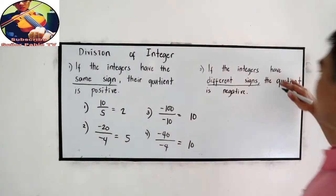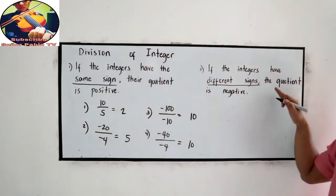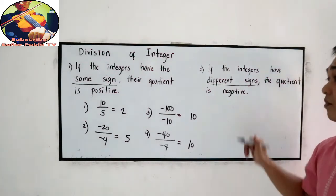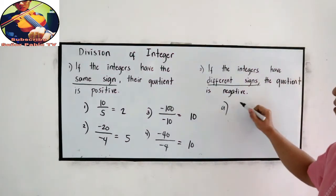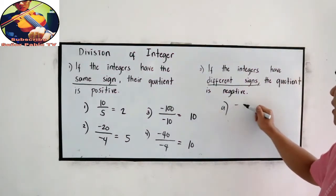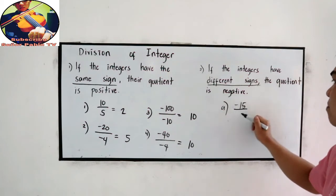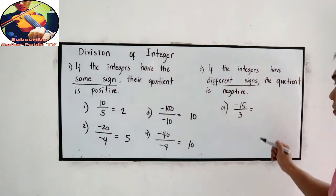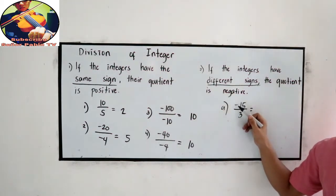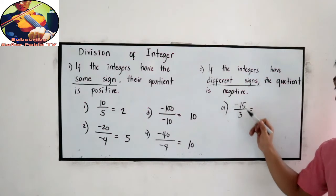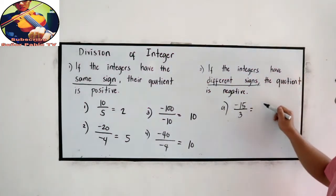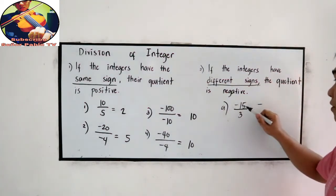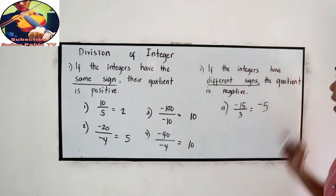If the integers have different signs, their quotient is negative. Let's say negative 15 divided by positive 3. The numerator is negative, denominator positive, so they are unlike signs. Negative 15 divided by 3 is negative 5.